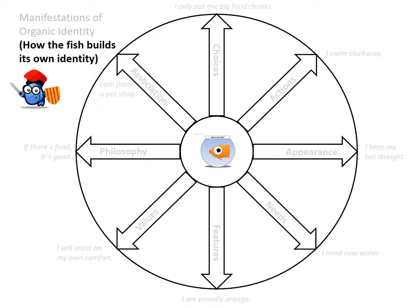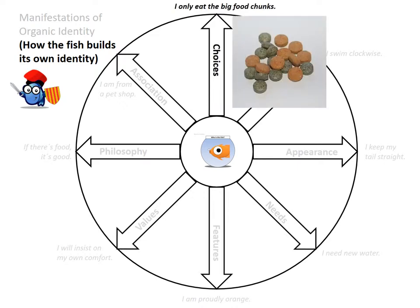I am calling the goldfish a unique agent, as you can see here in the middle. This is the goldfish, the unique agent. Unique because there is only one. Agent because he will do stuff. And I believe that everything this goldfish does manifests his identity.